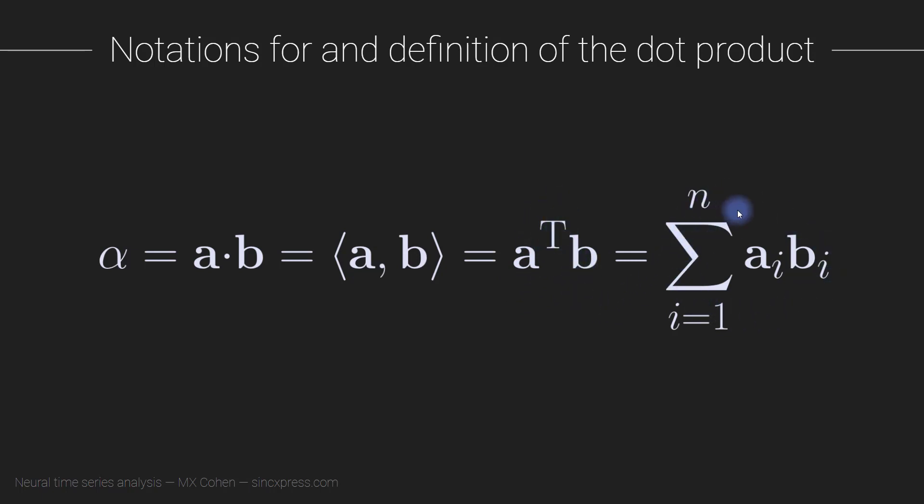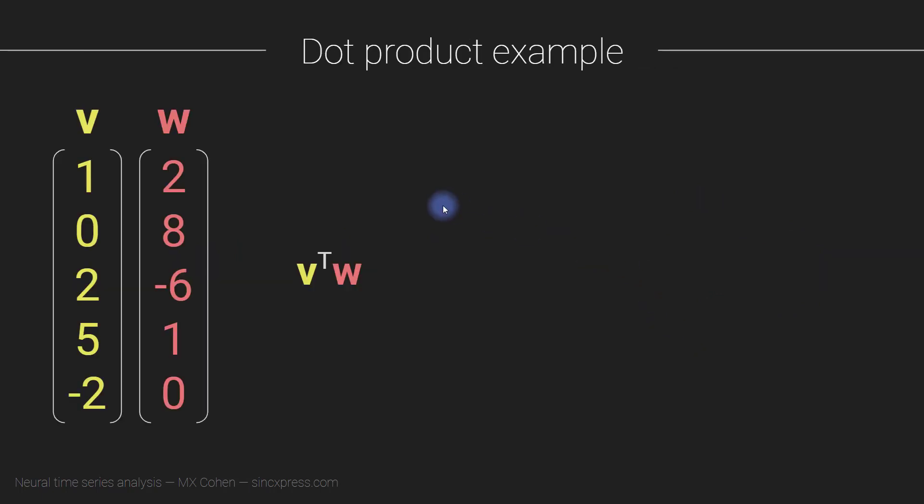Here's the formula for computing the dot product algebraically. We have vector a and vector b, and we multiply each corresponding element of a and b. So multiply the first element of a by the first element of b, the second element of a times the second element of b, and so on. Then we sum up all of those individual pointwise multiplications. This is the algebraic formula. Let me show you an example to give you a sense of how to compute the dot product.